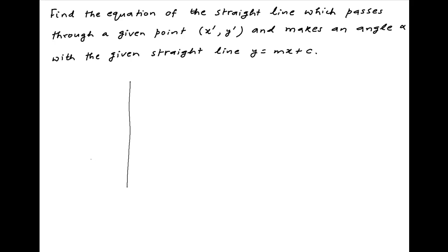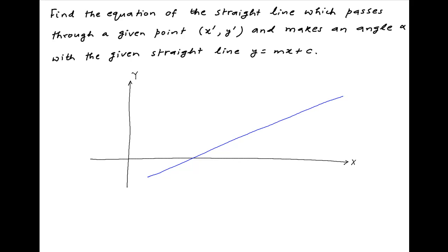Let's start by representing the given information on the Cartesian plane. We are given the line y is equal to mx plus c. Let's assume that it cuts the x-axis at the point L, and that it makes an angle theta with the positive direction of the x-axis. Therefore, the gradient of this line is equal to tan theta, which is equal to m from the equation of the line.